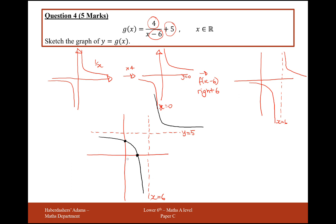So the first thing I'm going to do here is set the x coordinate equal to 0 here. So 4 over minus 6 plus 5, that's going to give me minus 2 thirds plus 5, so 5 take away 2 thirds, which is going to give me 4 and a third. So this coordinate here is going to be 0 first, then 4 and a third next.